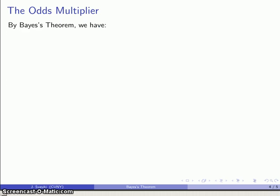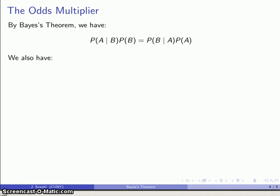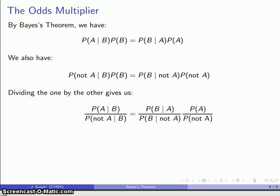At this point, we can use Bayes' Theorem. By Bayes' Theorem, we have the relationship between the probability that A has occurred given B, and the probability that B has occurred given A. We can also write the analogous expression for the probability that A did not occur given B. When we divide one by the other, the probabilities of B drop out, and we get: the probability of B given A over the probability of B given not A, times the probability of A over the probability of not A.